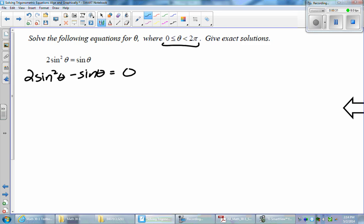As you can see here, you can factor something out, and what is common to both terms here is a sine theta. So if I take one out here, I'm left with 2 sine theta minus 1 is equal to 0.